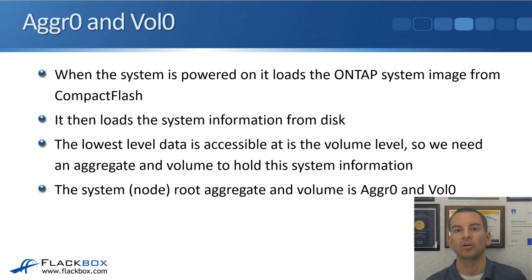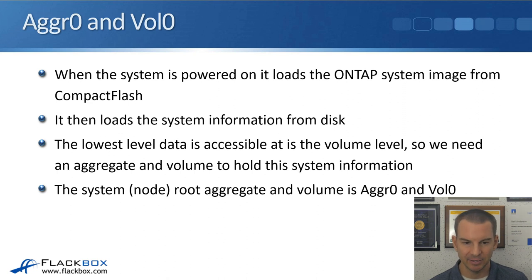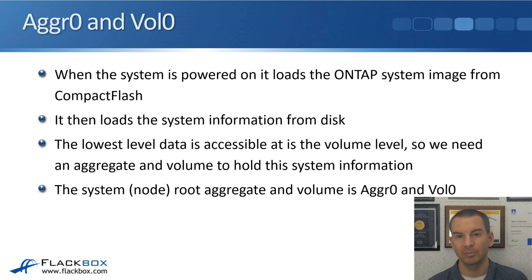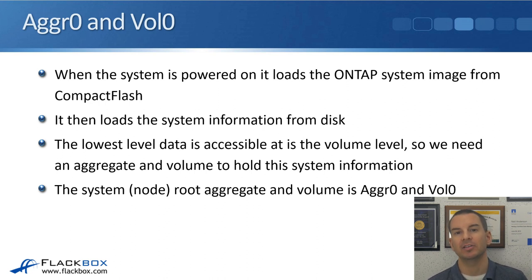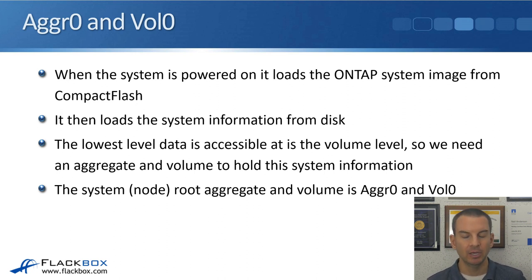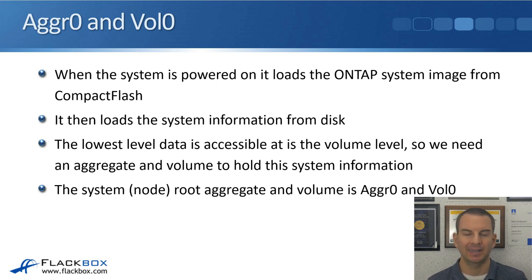As covered earlier in the boot-up process lecture: we have an aggregate 0 and a volume 0 on every node in the cluster. When the system is powered on, it loads the ONTAP system image — the operating system — from CompactFlash, and then loads the system information from disk. Any configuration you do on the system is saved to disk, into volume 0, which is located in aggregate 0. The lowest level that data is accessible at is the volume level, so we need an aggregate and a volume to hold that system information.